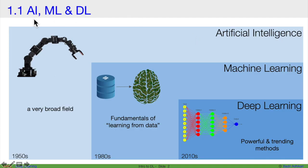Here is an example. Although the terms artificial intelligence, machine learning and deep learning are used interchangeably, they are different. Artificial intelligence is a very broad field. Within artificial intelligence is the field of machine learning that deals with fundamentals of learning from data. To increase the visibility of your mouse cursor, you can go to your computer settings and increase your cursor size.